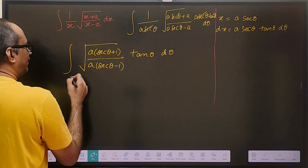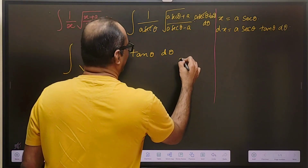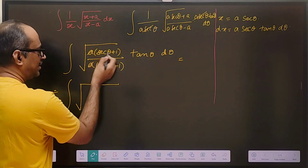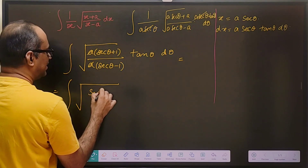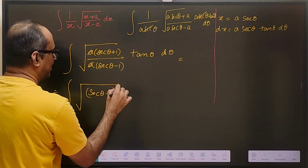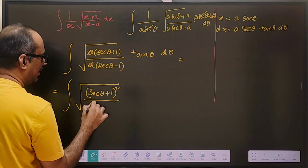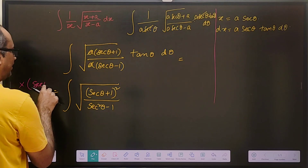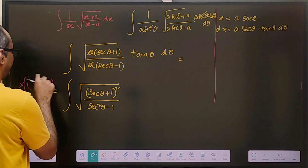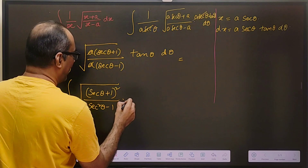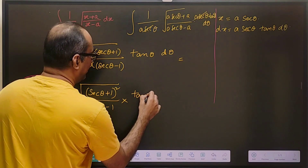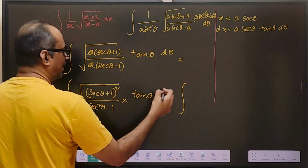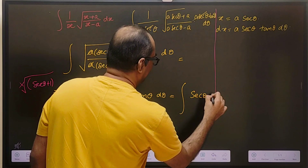Let us simplify this. We can cancel a, and then we do something like rationalization — we multiply (secant theta plus 1) by (secant theta plus 1), so that becomes (secant theta plus 1) whole square in the numerator. In the denominator it becomes secant squared theta minus 1. We multiply by (secant theta plus 1) inside the root. The square root of (secant theta plus 1) squared cancels, leaving us with just secant theta plus 1.